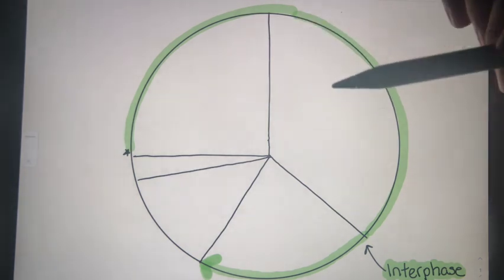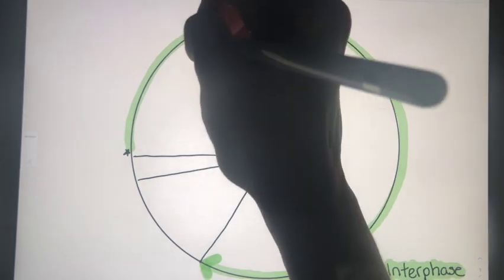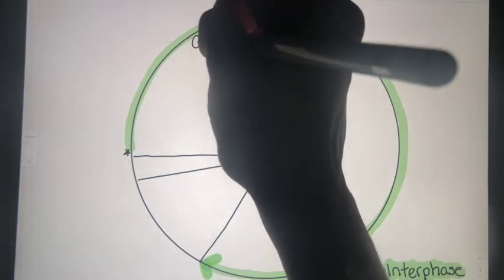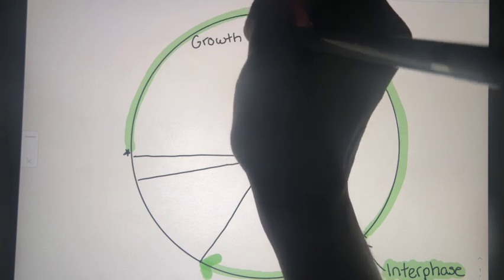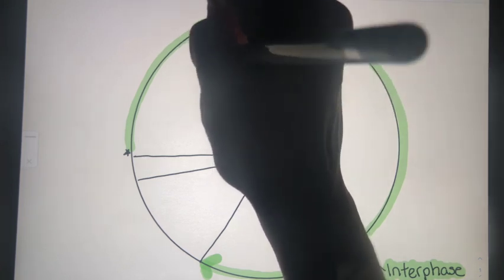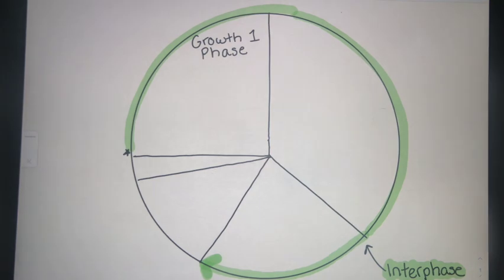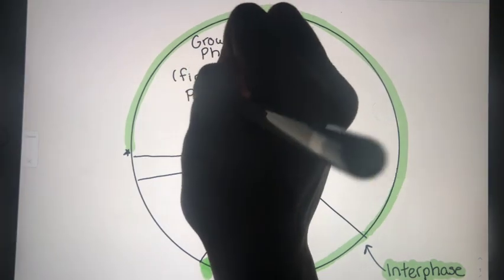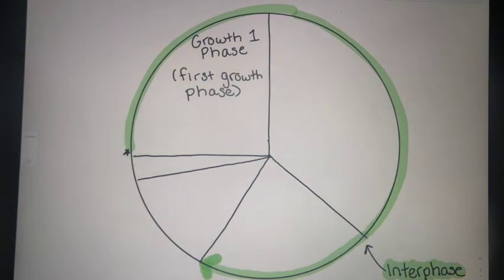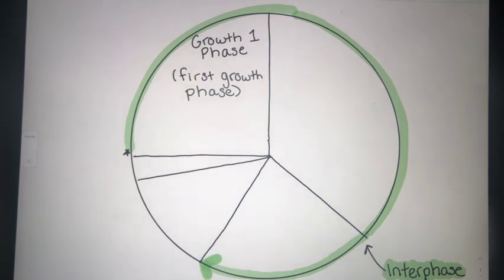This first section here, first quarter, that's going to be the G1 or growth one phase. So as you can imagine, during this first one, the cell is going to be growing. It's going to be developing. It's going to be able to do those functions that its proteins are telling it to do.